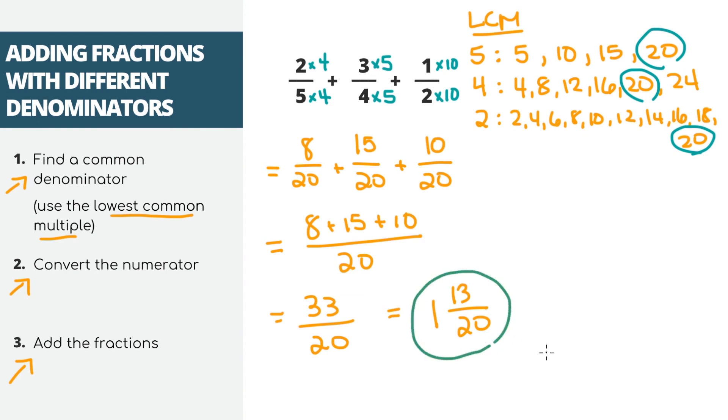In general, if you have 3 or 4 or 5 or 20 fractions with different denominators you need to add, this is the same exact process you'll do. You'll just have to find the least common multiple for all of the denominators, then convert the numerators of all the fractions and add them up.